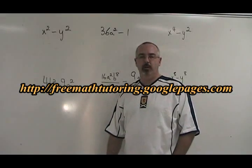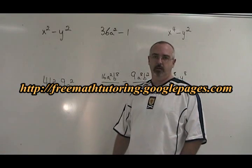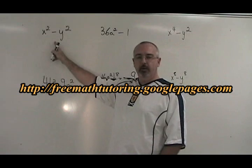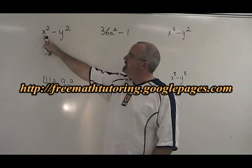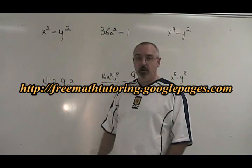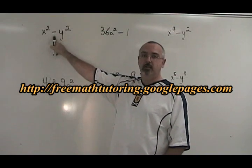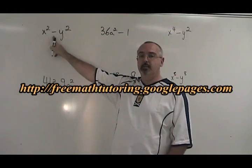The second factoring method we will learn is called difference of squares. It only works with binomials, and in every binomial that can be factored this way, both the first term and the second term have to be squares. It is called difference of squares because the sign in the middle has to be a minus. If it's a plus, this method won't work.